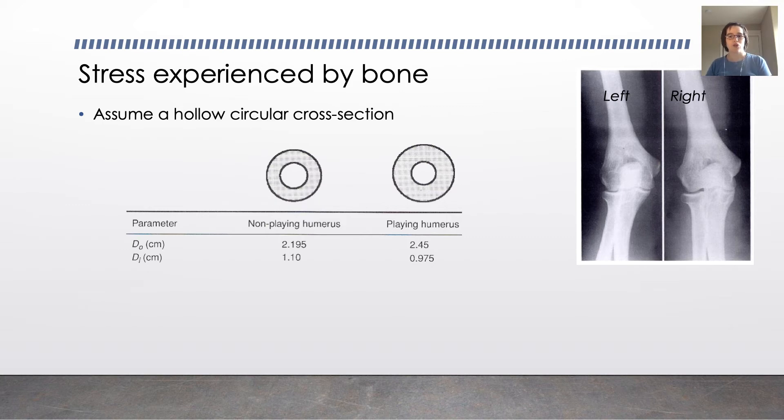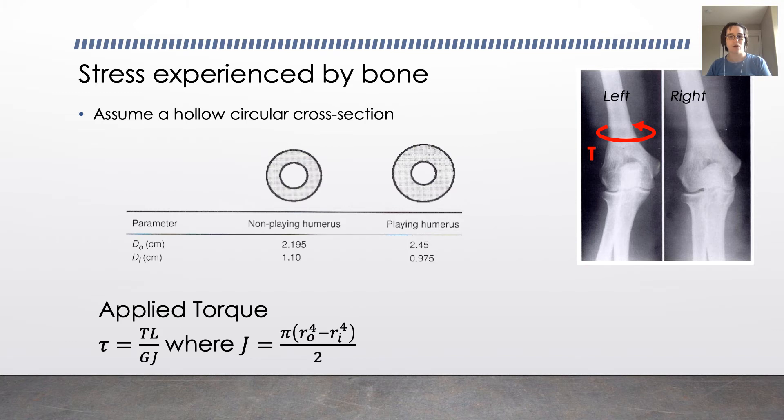And then if you think about a torque being applied to the arm, okay, really probably to the right arm, but torque being applied to the arm. And remember back to mechanics and materials, the shear stress due to an applied torque depends on the torque and the length and depends inversely on the modulus of rigidity g and j, the polar moment of inertia, where j is dependent on the radius to the fourth. And so a larger outer radius and a smaller inner radius both result in a bigger j.